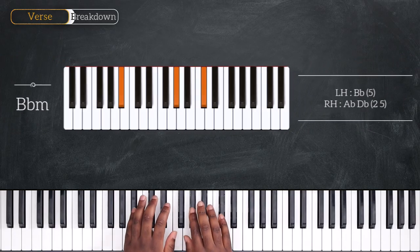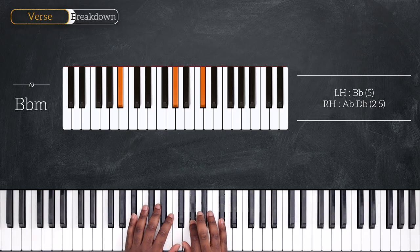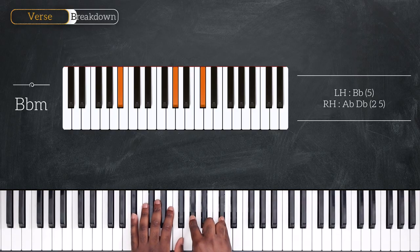Going up once again, now on Bb minor. Bb on the left, Ab and Db. So, that's Bb minor 7.